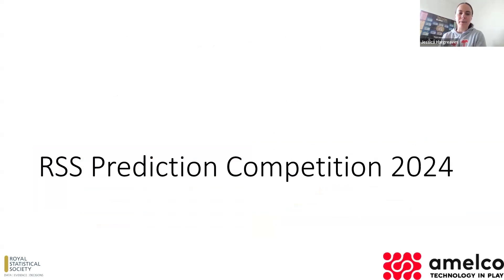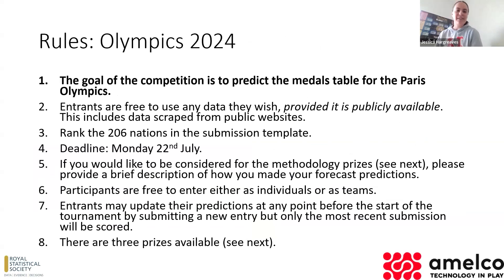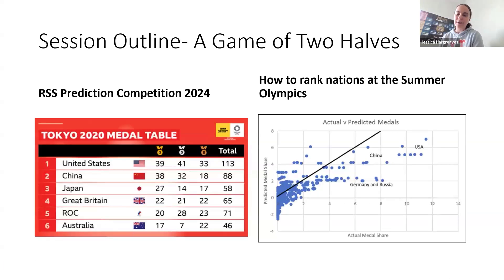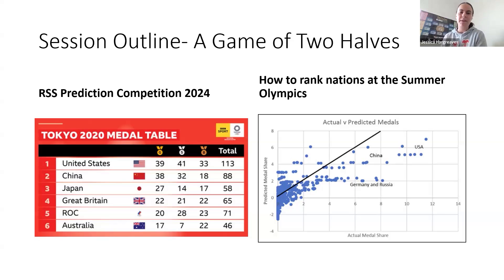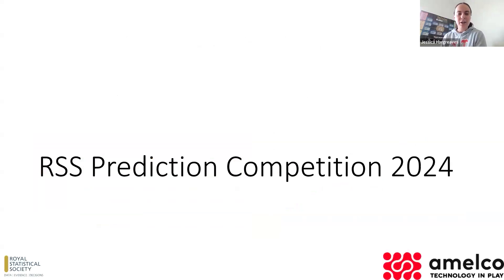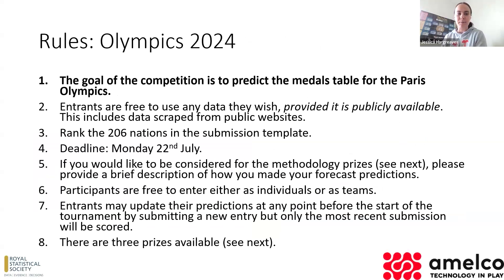Just a little word about the prediction competition this year, which is sponsored by Amelco. The goal of the competition is to predict the medals table for the Paris Olympics — that's how the BBC would represent the medals table, number of golds followed by number of silvers and so on, not the total medals won. Your job is to rank the 206 nations that are competing in the Olympics this year in the submission template.